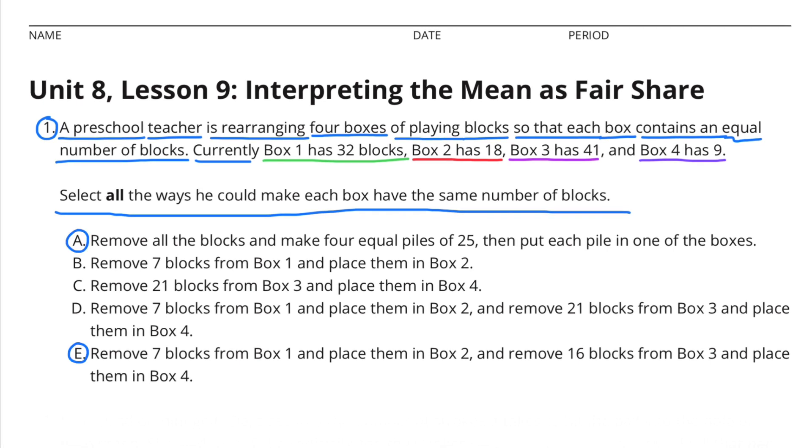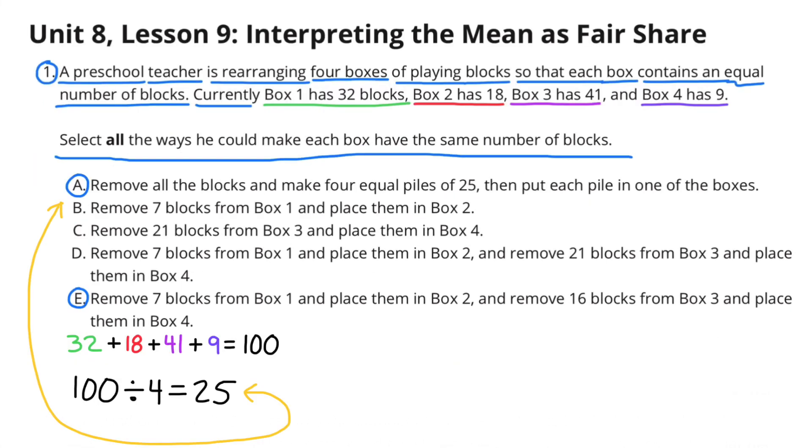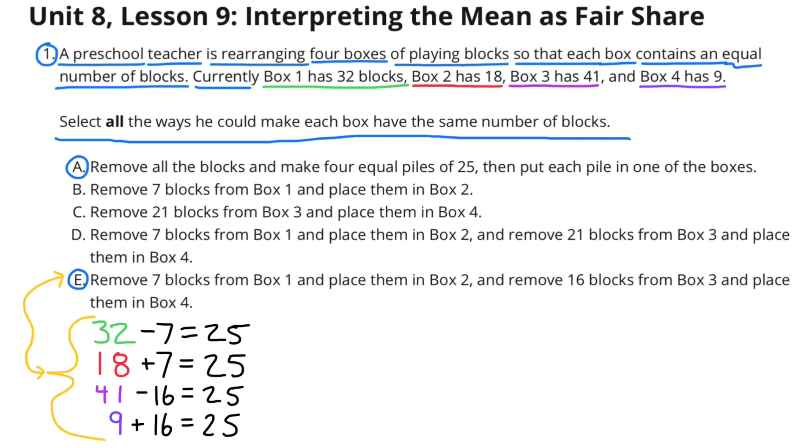I selected A and E. 32 plus 18 plus 41 plus 9 equals 100, and 100 blocks divided by 4 boxes equals 25 blocks inside each box. 32 minus 7 equals 25 blocks, 18 plus 7 equals 25 blocks, 41 minus 16 equals 25 blocks, and 9 plus 16 equals 25 blocks, so I selected E.